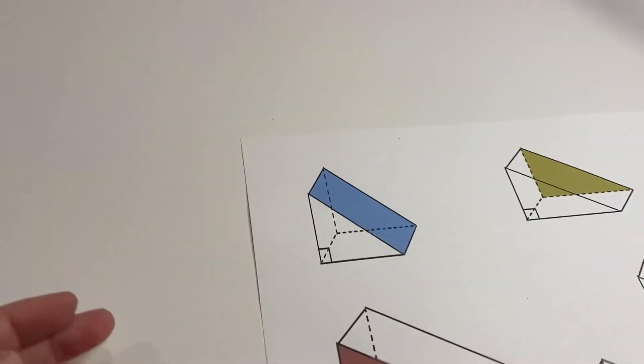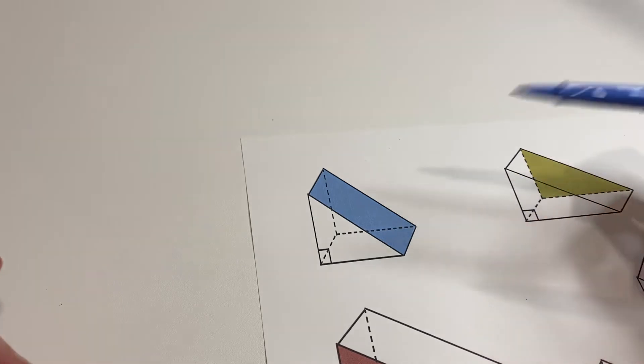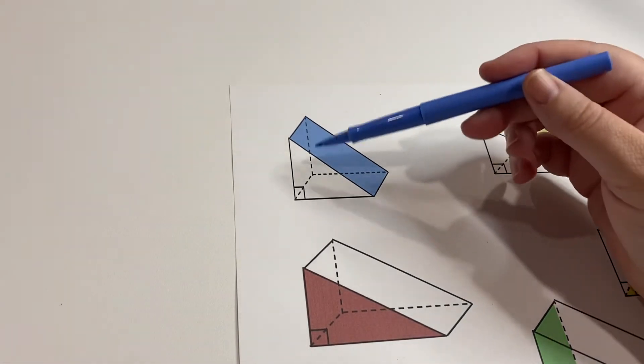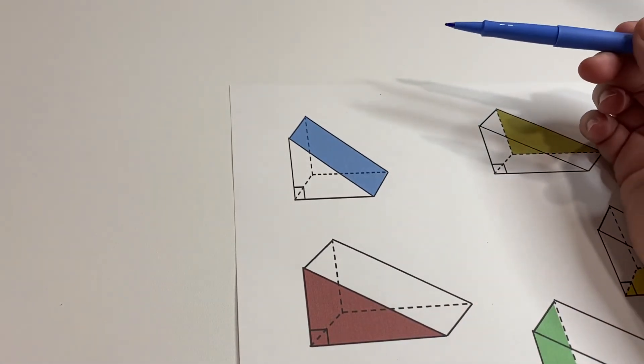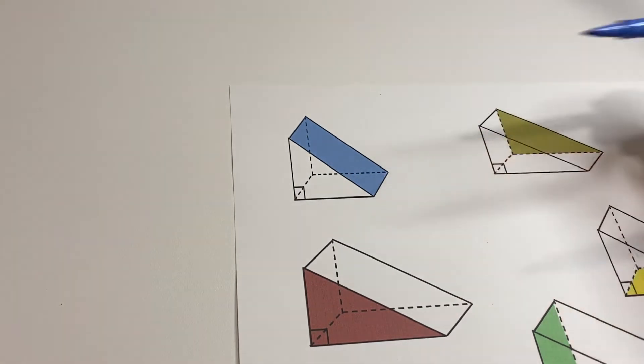Then we have these rectangles, okay? And sometimes they could be matching, but typically they're probably not, just depends on the measurements of the triangle. But this one, we would call that the front rectangle.